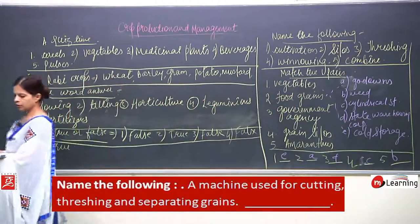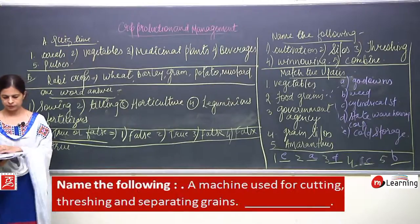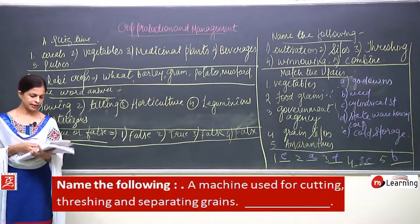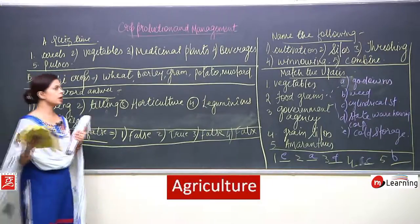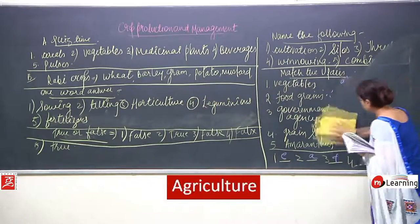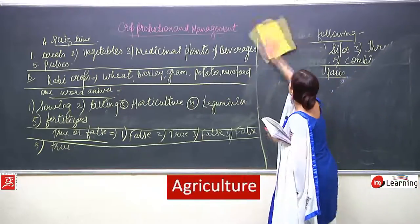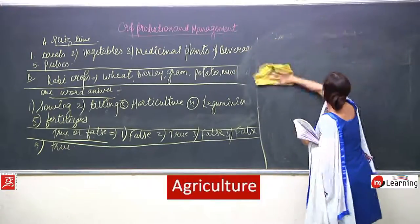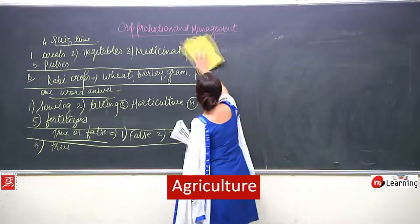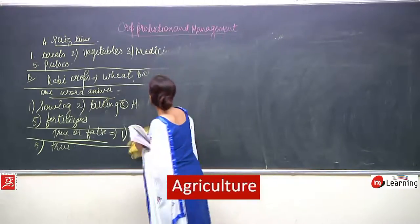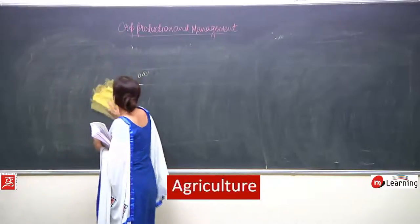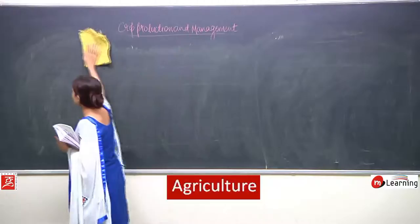Now let us define agriculture. What is the meaning of agriculture? How can we define agriculture? We know how to define crops and we have learned about agriculture practices, but what is the meaning of agriculture? Agriculture means the process of growing crops. And what is the meaning of crops? When the same kind of plants are grown on the land — that is crops.